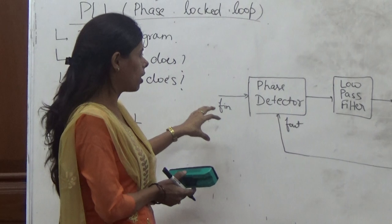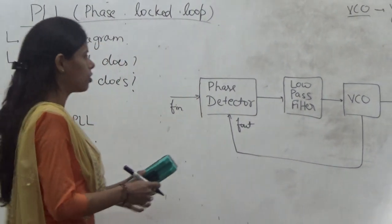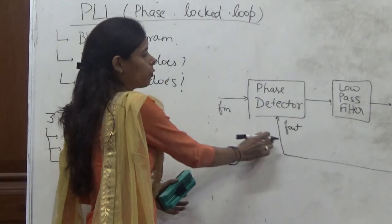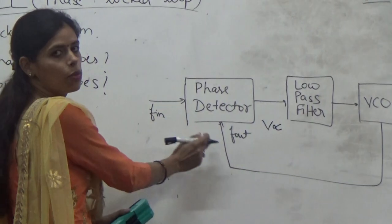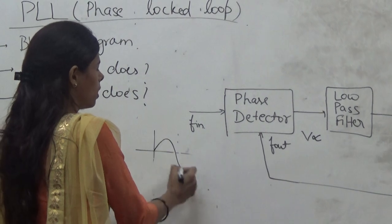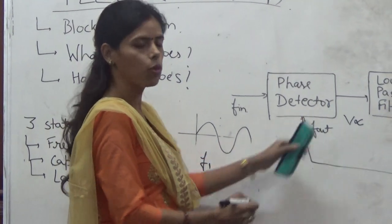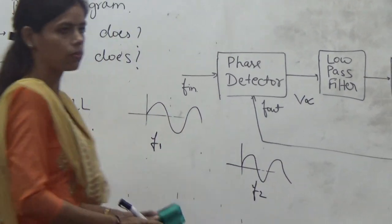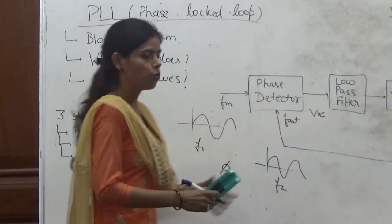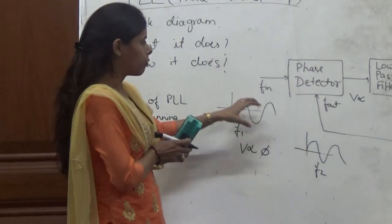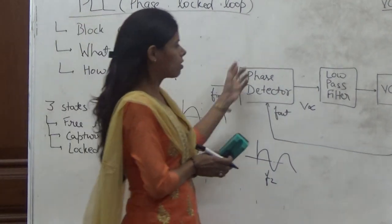To understand the function of PLL, we should know the function of each of these blocks. The first block is the phase detector. The function of this block is: if we give two different signals at the input of this phase detector, the output will be a voltage, and that voltage will be proportional to the phase difference between these two signals. So every time we give two different signals to this block, it will generate an output voltage proportional to the phase difference between those two signals.